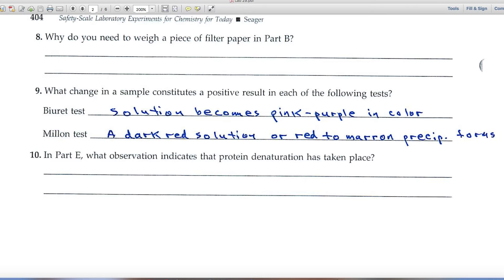The Biuret test, positive Biuret test, is when the solution becomes pink purple in color. And a Millon test forms a dark red solution, or red to a dark red precipitate.